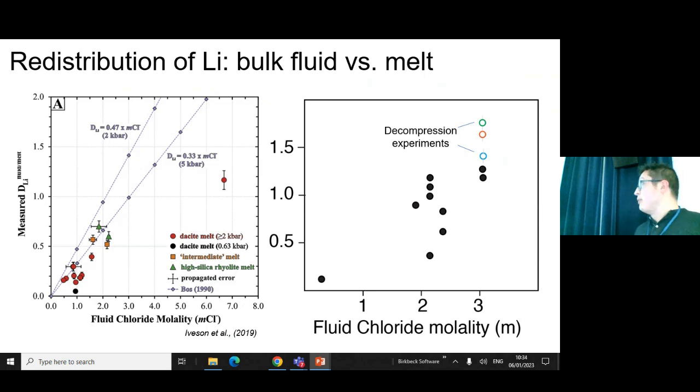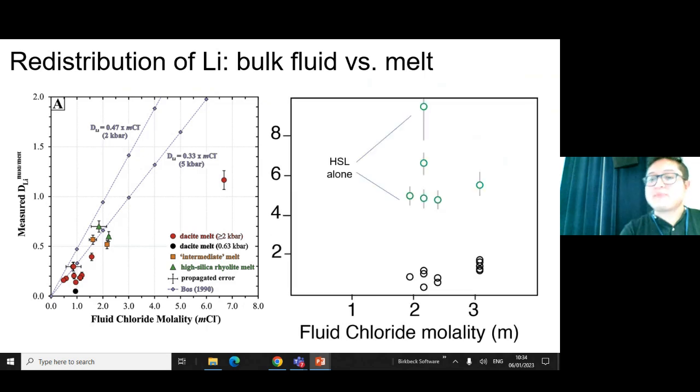However, it's still just 1.5 the partition coefficient. If you really want to get a lot out from the melt, perhaps this is not the most efficient way.